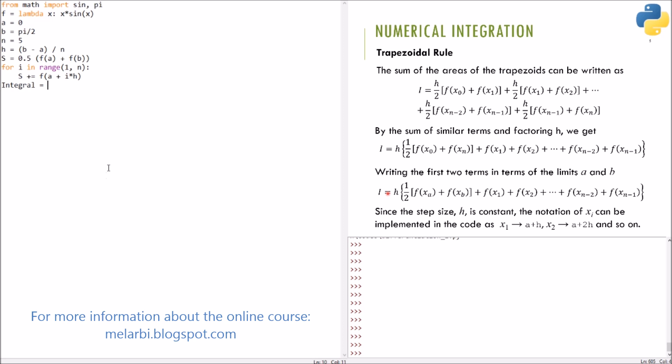The last thing remaining is to multiply the whole thing by h. We'll do integral equals h multiplied by s. Now, let's print the result. Integral equals to integral. That's it.